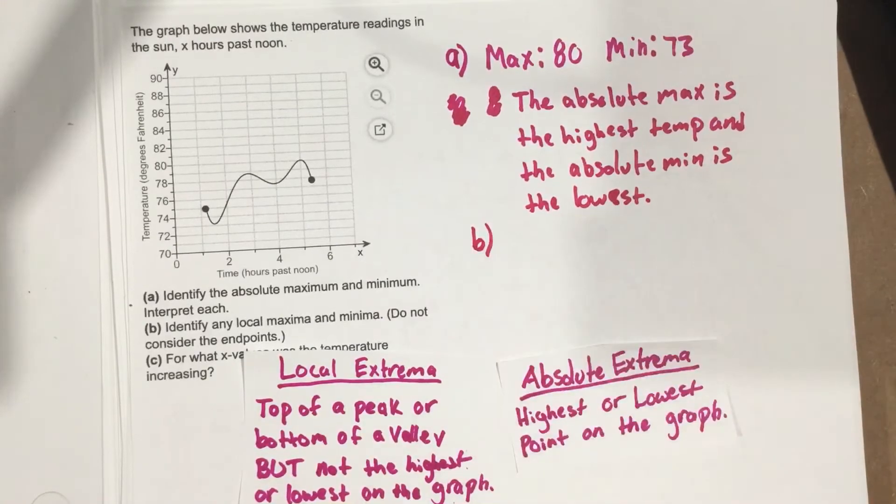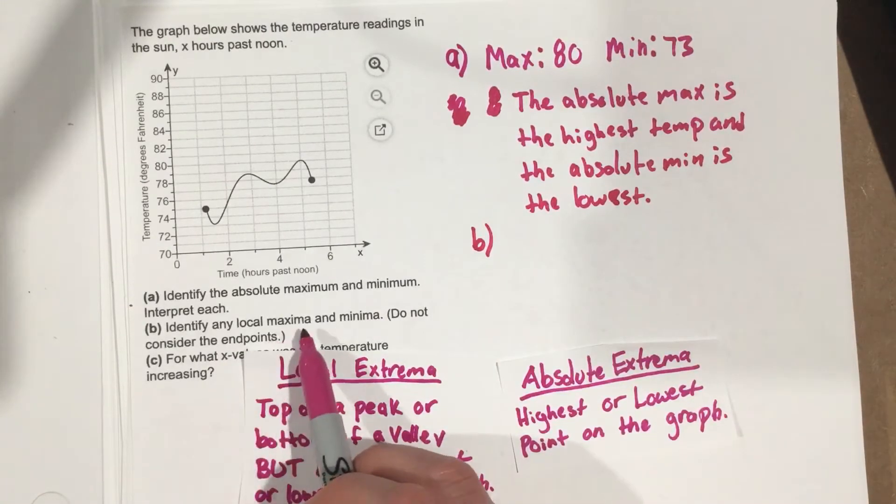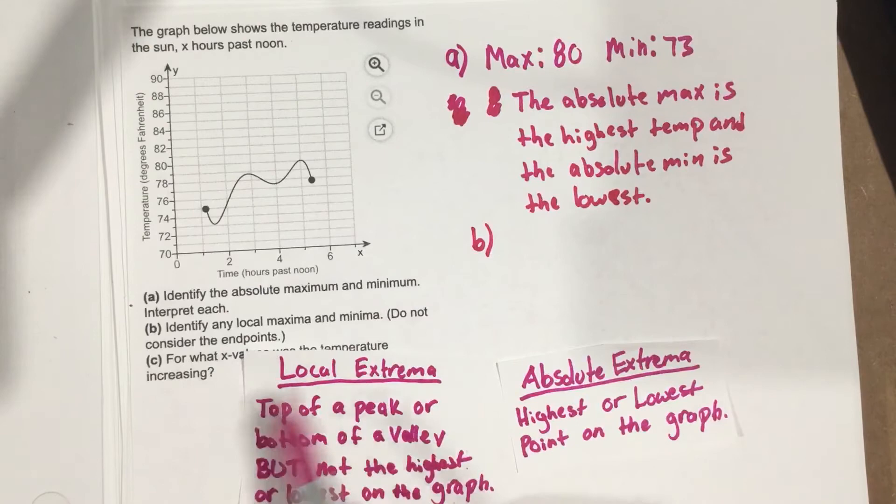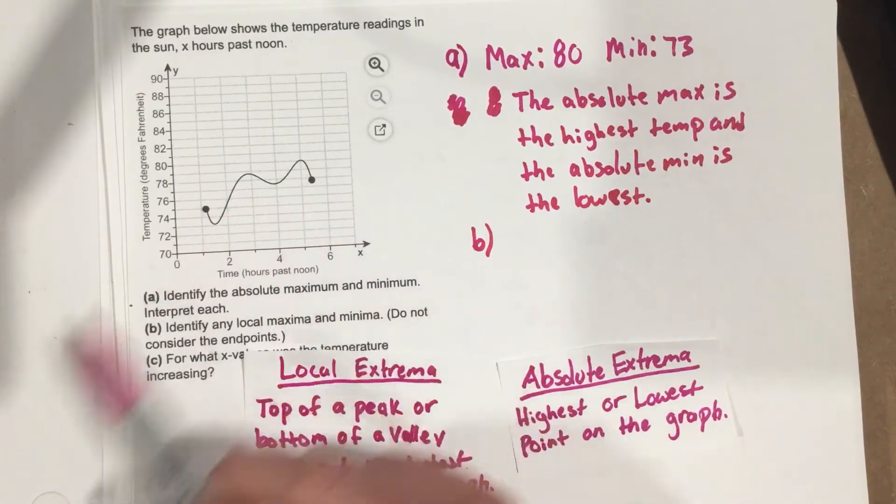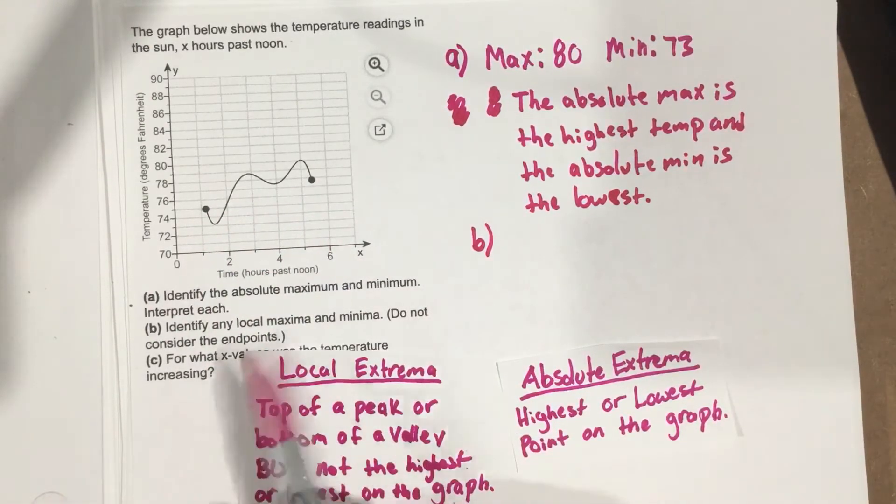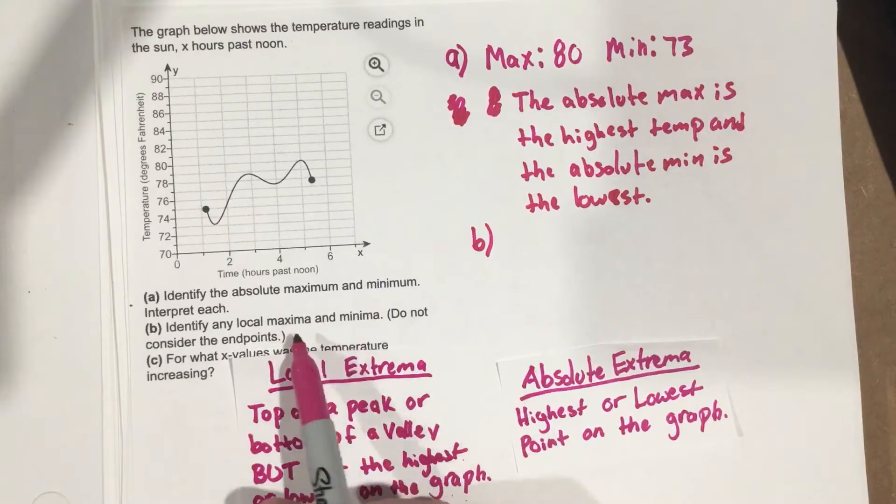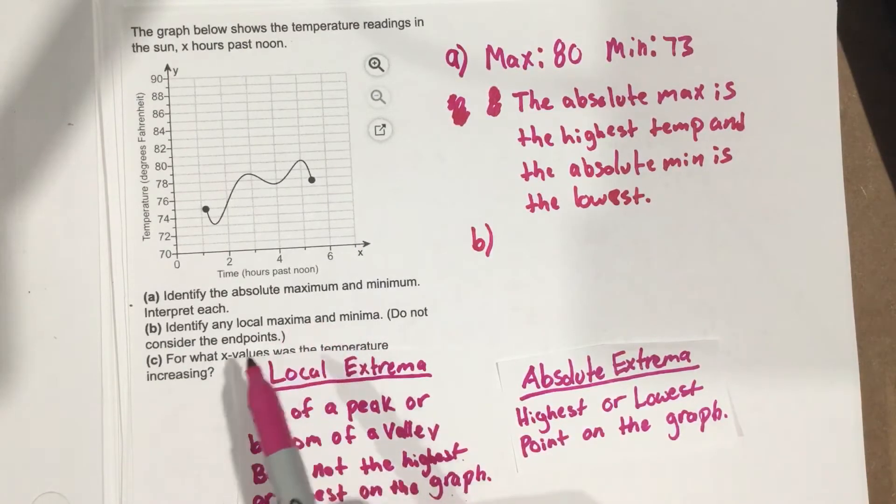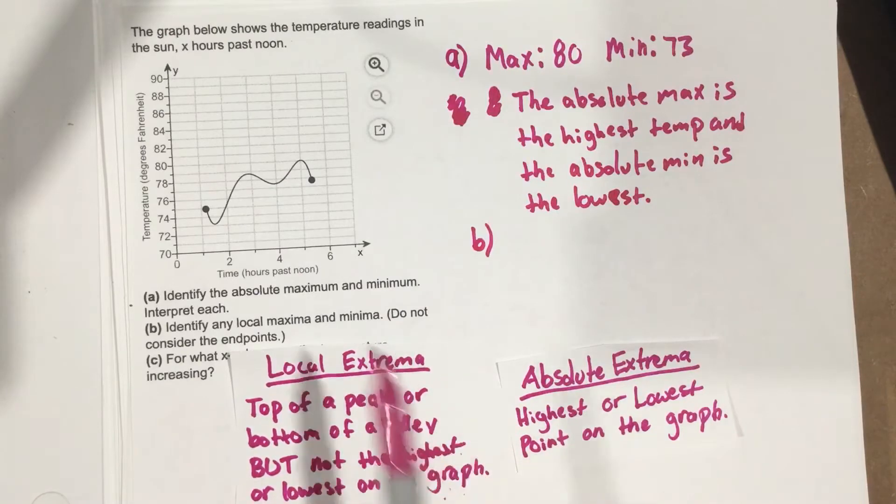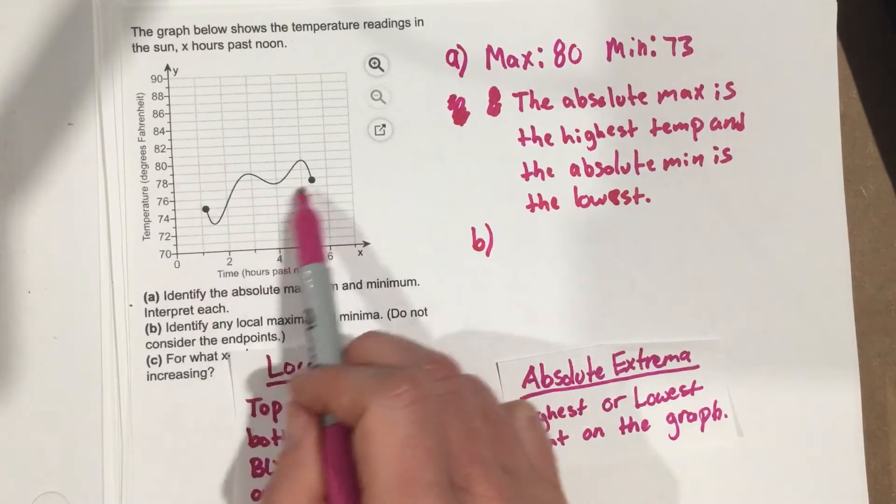Part B: Identify any local maximum and minimum, not considering the endpoints. We don't consider endpoints because local max and min occur when the function changes from increasing to decreasing - at peaks or valleys - and we don't have peaks or valleys at these endpoints.